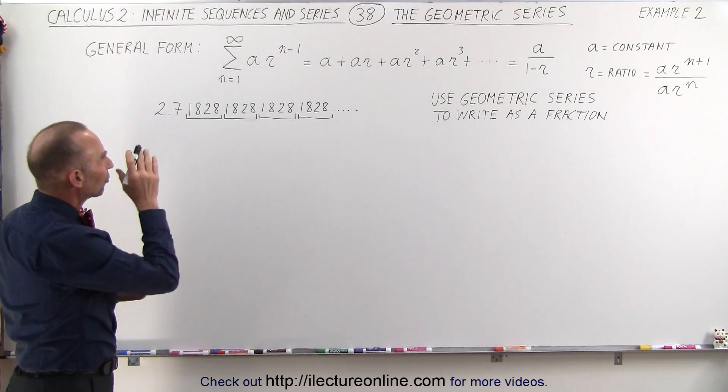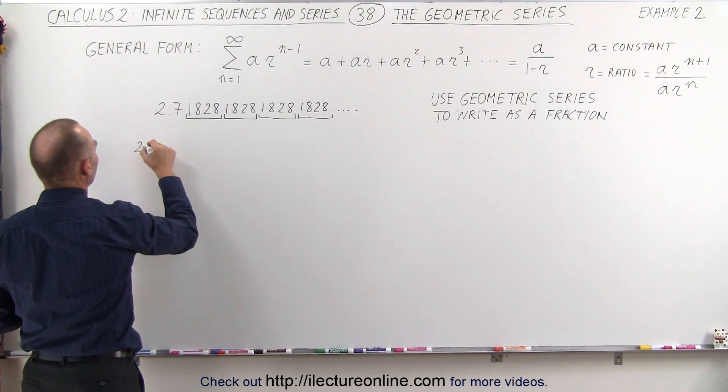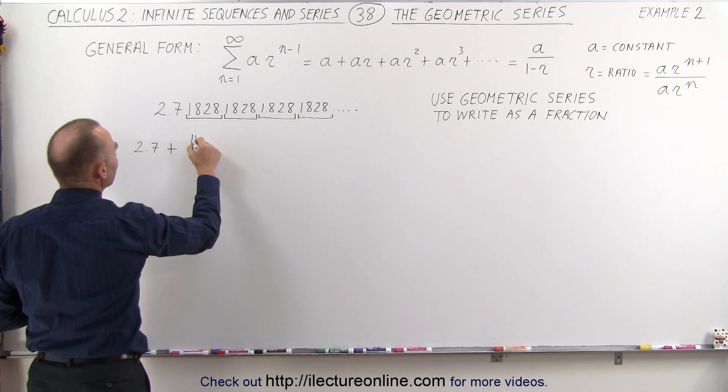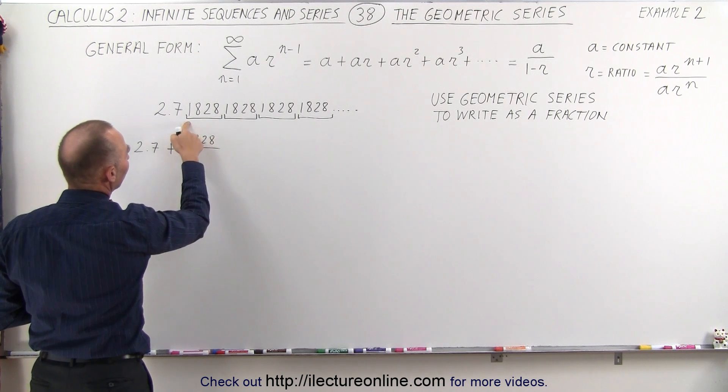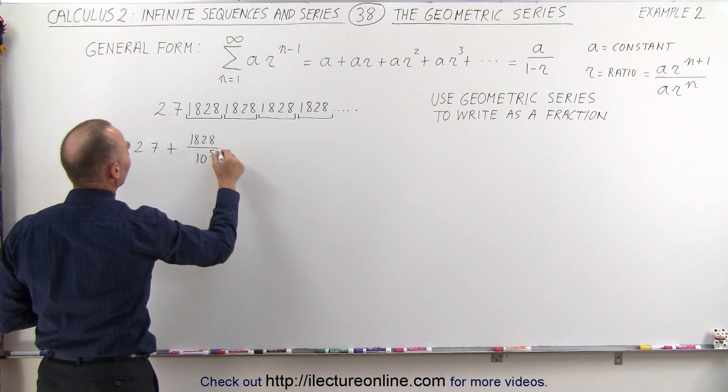So let's start writing this as a sum of numbers. This can be written as 2.7 plus 1828 divided by, since that's the 2nd to 5th decimal, we can write this as divided by 10 to the 5th.